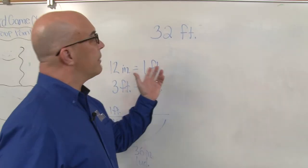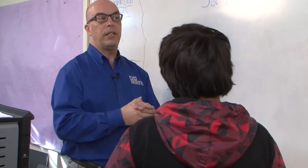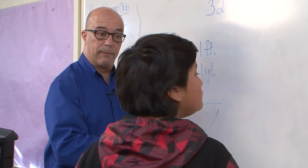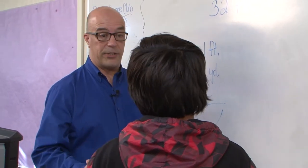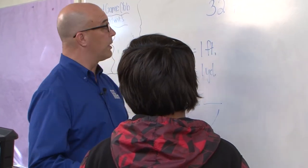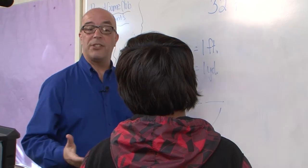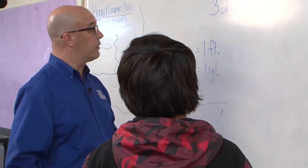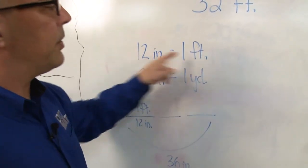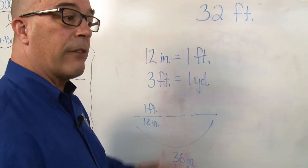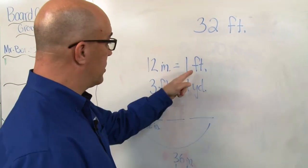We have a problem here where we are 32 feet from ourselves to the door, and we'd like to know how many yards that is. So first what we're going to do is we're going to review some basics about the measurement. So if we have 12 inches, that's equal to one foot. If we have one ruler, we have one foot, which is 12 inches.